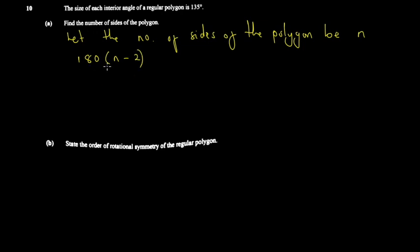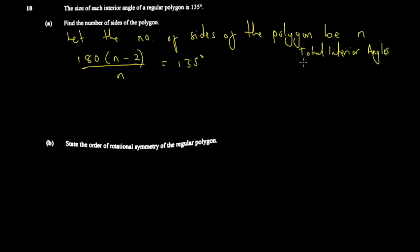This formula gives the total interior angles. To get each interior angle, you divide by the number of sides — which equals the number of angles. So the formula is: total interior angles divided by number of sides equals the interior angle. You can quickly verify this: if you put n equals 3 for a triangle, you get 180 times 1, which is 180 degrees — and a triangle indeed has 180 degrees total for its interior angles.